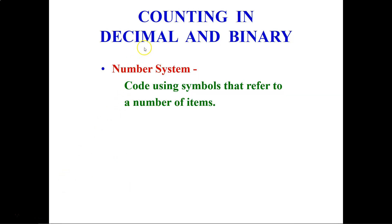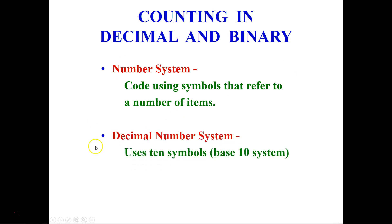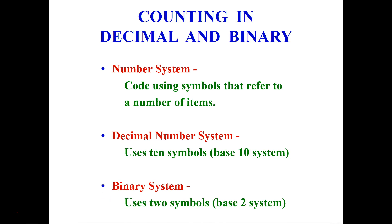Let's first start with counting in decimal and binary, beginning with the number system. A number system is a code that uses symbols to refer to a number of items. The decimal number system uses symbols from 0 to 9 — that's 0, 1, 2, 3, and so on till 9 — and contains 10 symbols, sometimes called the base 10 system. The binary system uses only two symbols, 0 and 1, and is sometimes called the base 2 system.